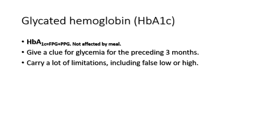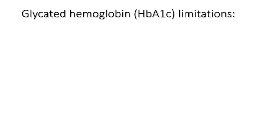Glycated hemoglobin A1C — also called HbA1c — gives us a clue about glycemic control in the preceding three months. As mentioned in the previous lecture, the diagnostic criterion for diabetes is an HbA1c more than 6.5%. It reflects the preceding three months because HbA1c is related to the lifespan of red blood cells, which is approximately 120 days. However, glycated hemoglobin carries many limitations and can be falsely low or falsely high in certain conditions, which must be taken into consideration when interpreting HbA1c levels.